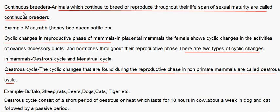Continuous breeders are animals which continue to breed or reproduce throughout their lifespan of sexual maturity. Examples include mice, rabbit, honeybee queen, cattle, etc.